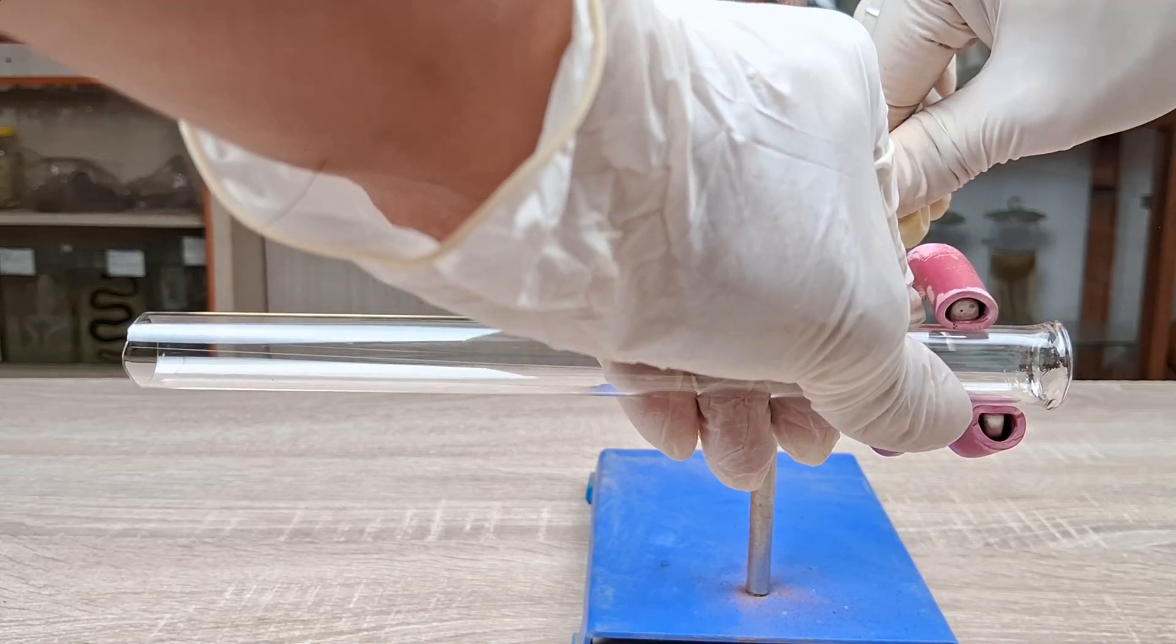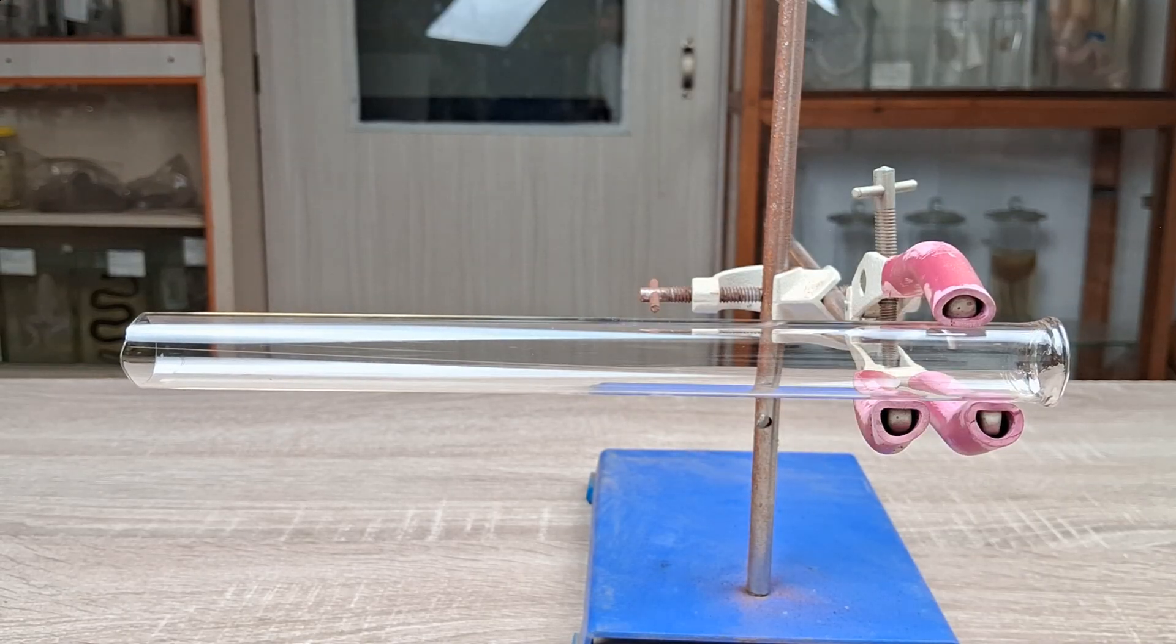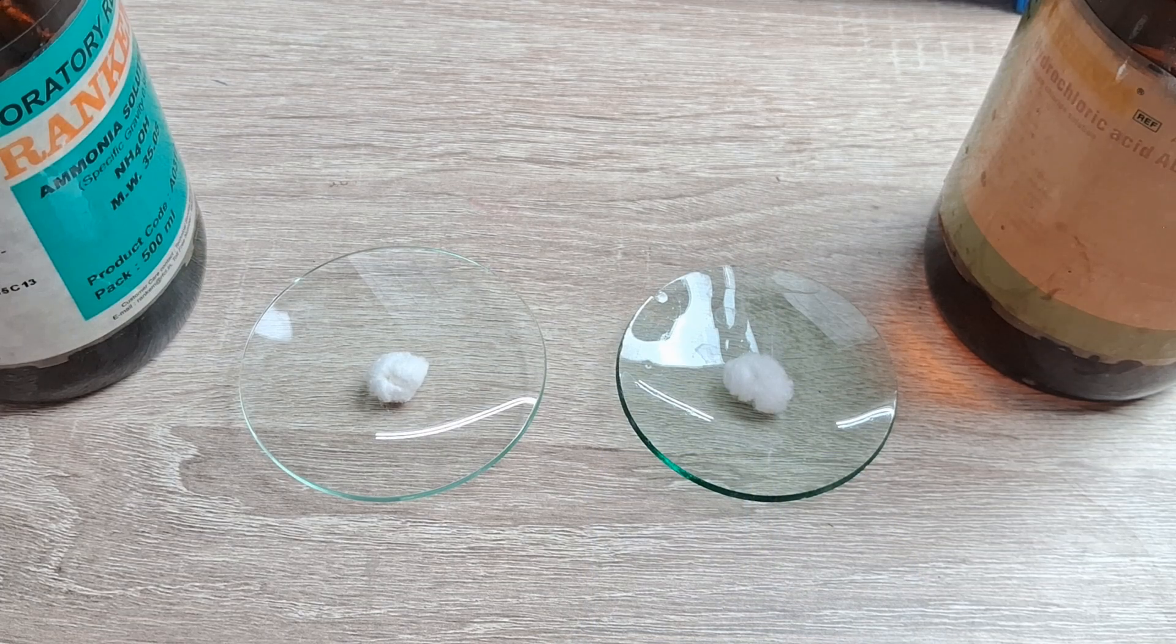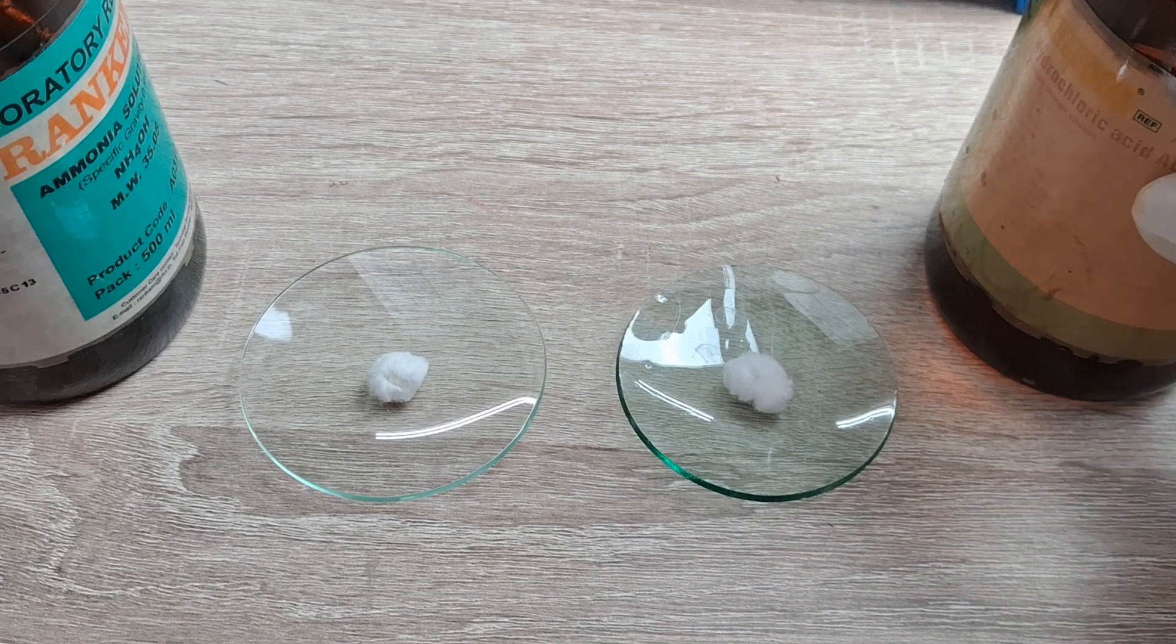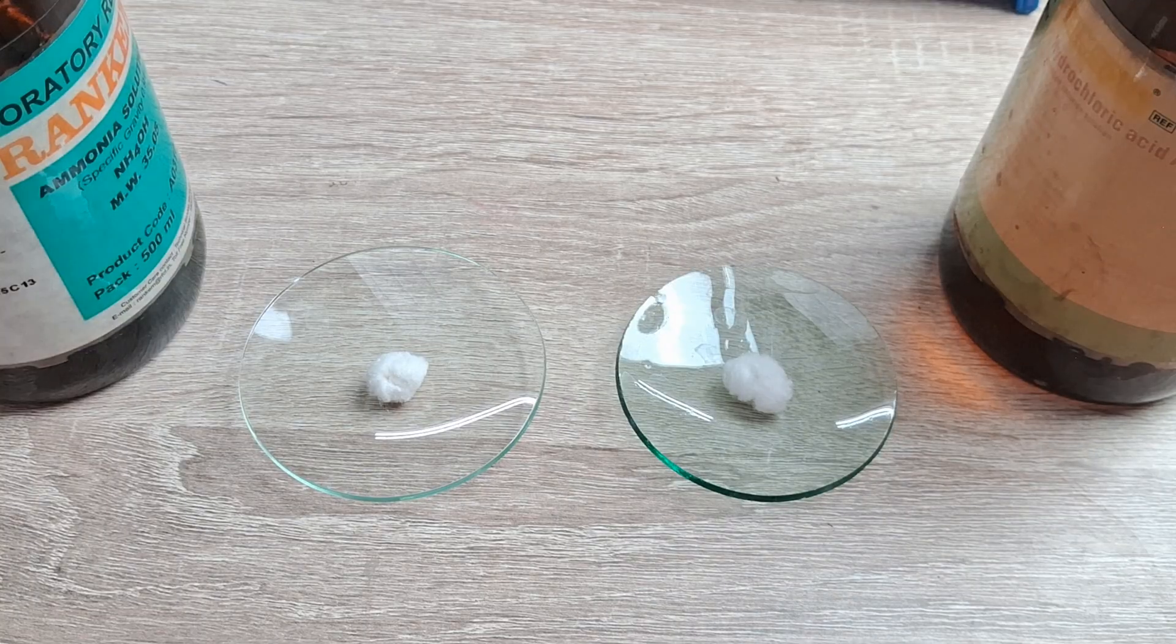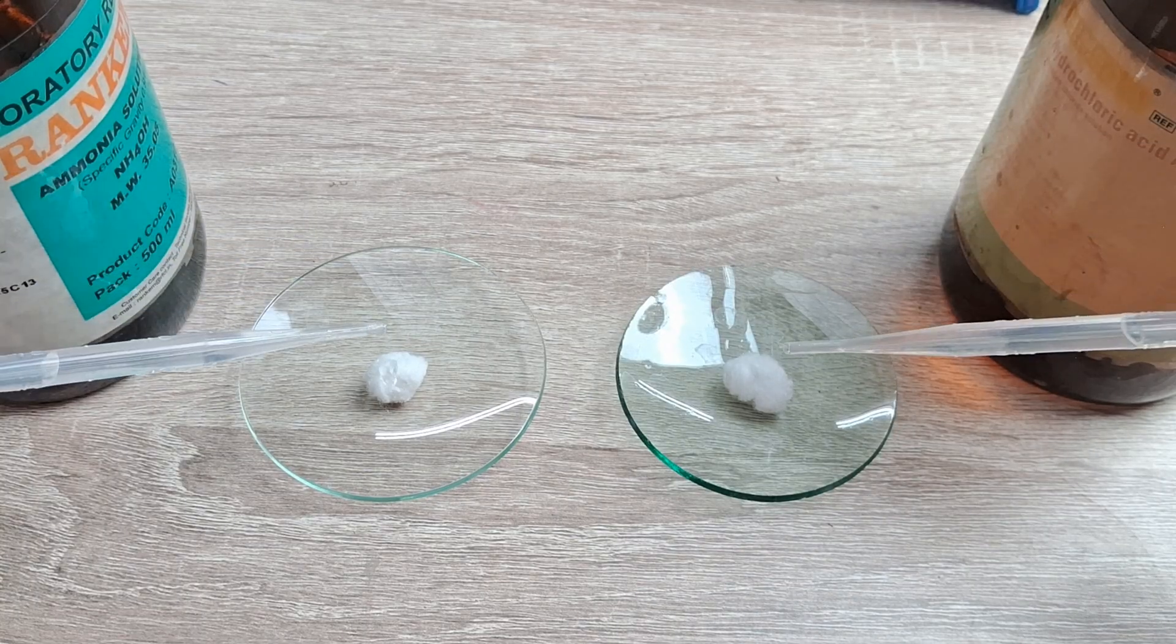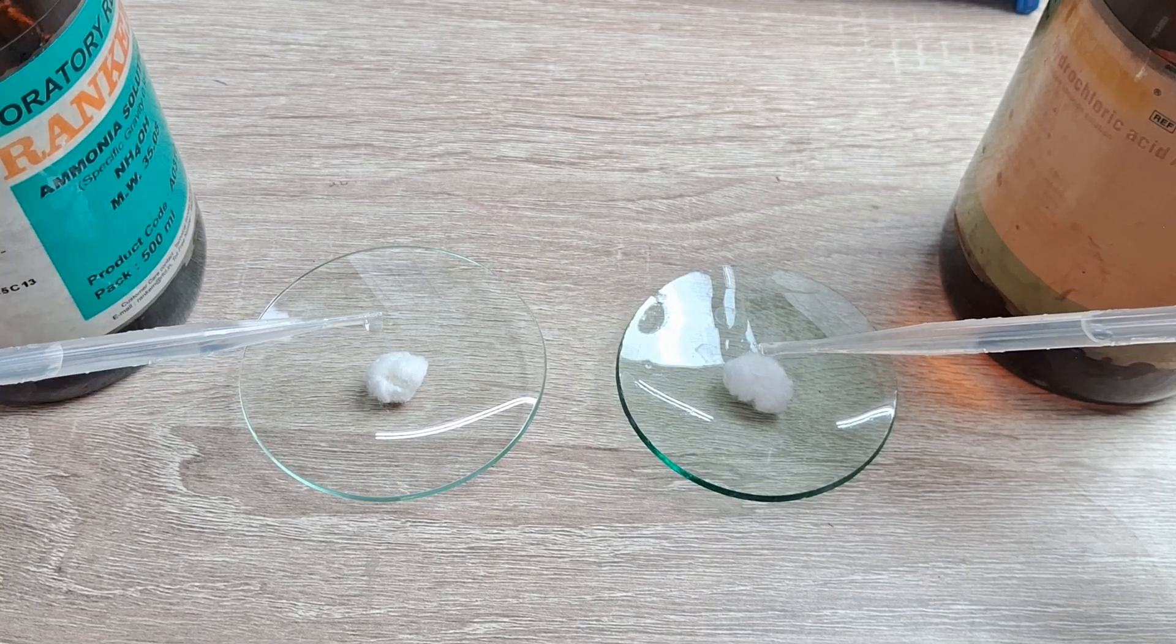Next, take the cylindrical tube and fasten it on a retort stand using a finger clamp. Now, take two cotton balls in two watch glasses or petri dishes and add several drops of ammonia and hydrochloric acid to each cotton ball using the droppers.